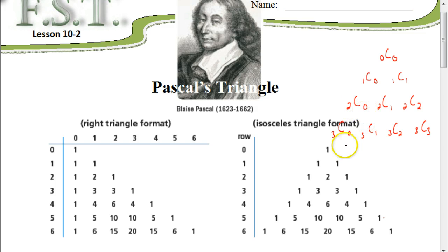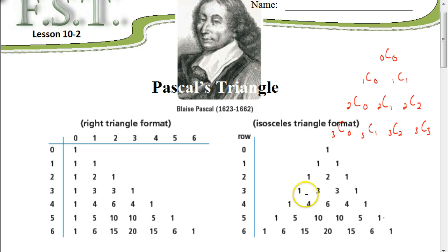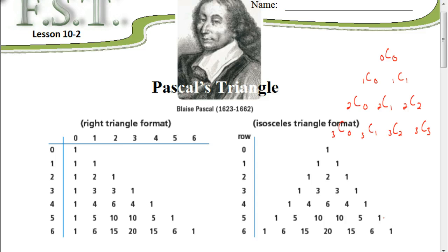Continuing: 2 choose 0 is 1, 2 choose 1 is 2, and 2 choose 2 is 1 again. And 3 choose 0 is 1, 3 choose 1 is 3, 3 choose 2 is also 3, and 3 choose 3 is 1. So you can see how we can use combinations to come up with the different items in Pascal's Triangle.